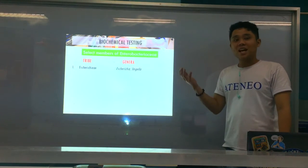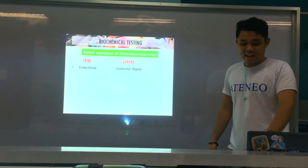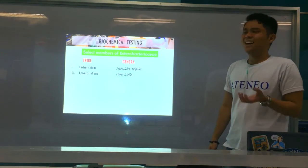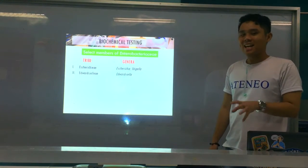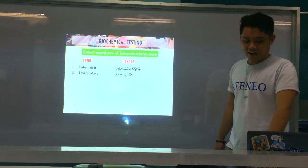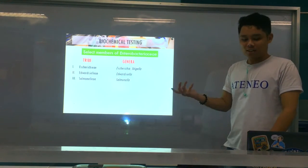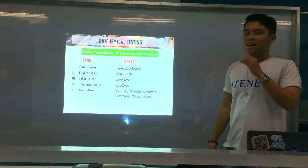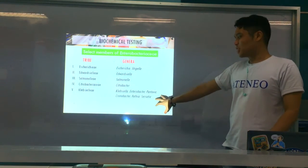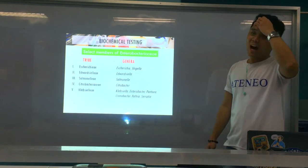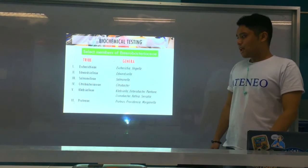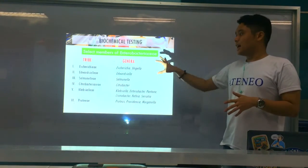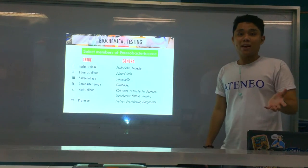For the first one is the Escherichiae — you have Escherichia and Shigella. You have Edwardsiellae. For Salmonellae, that is Salmonella. Citrobacteraceae is Citrobacter. Klebsiellae includes Klebsiella, Enterobacter, Pantoea, Cronobacter, Hafnia, and Serratia. Proteae is your Proteus, Providencia, and Morganella. These are the major tribes and the genera found in each — the select members of your Enterobacteriaceae.